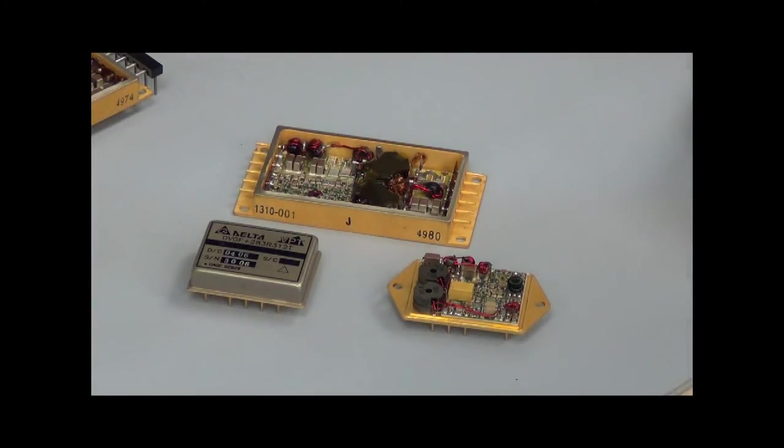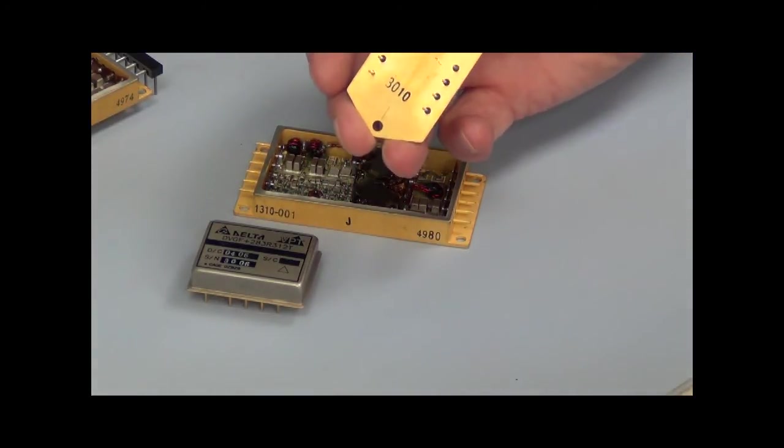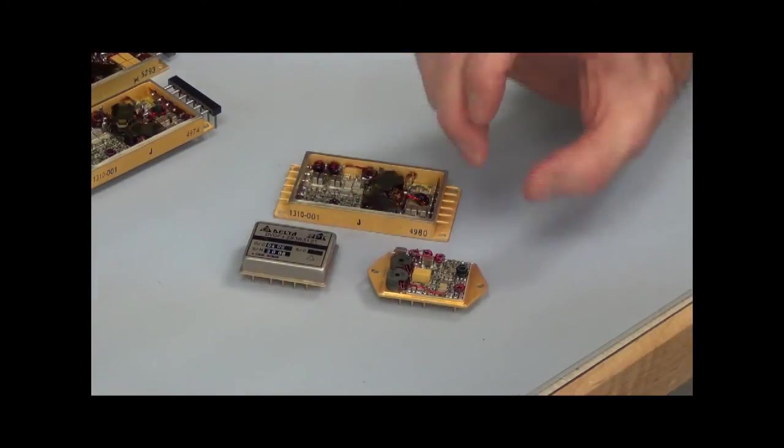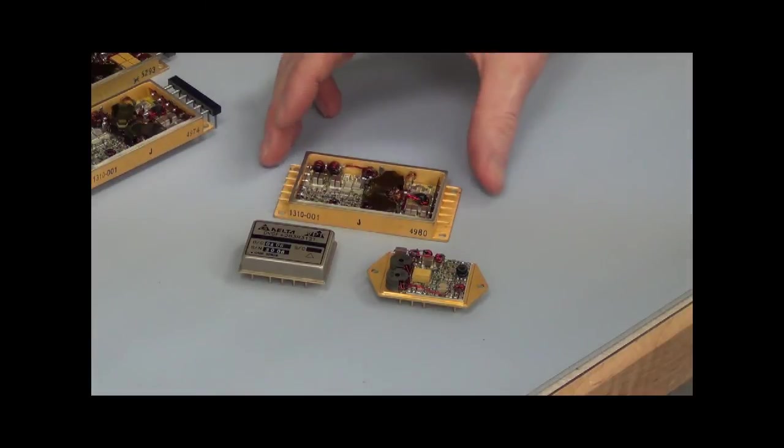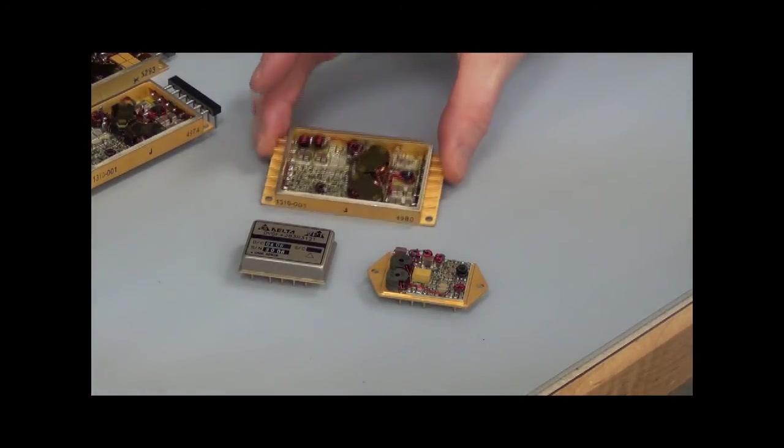There's two types of packages. The down-leaded package where the pins come out the bottom. It's available both in a flanged version with mounting flanges and without the mounting flanges. There's also a side lead package where the pins come out the side.